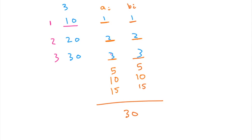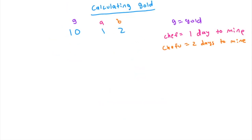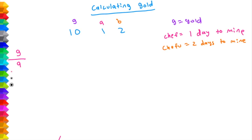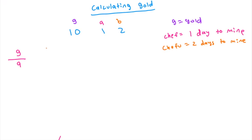Now let's go over what this optimal strategy is and how we actually got to the number 30. First, let's go over how to calculate how much gold each person gets if both of them mine together in the same gold mine. Chef will mine G gold over A per day — basically, the amount of gold divided by the amount of days is the amount of gold he earns per day. Similarly, Chefu gets G over B gold per day.